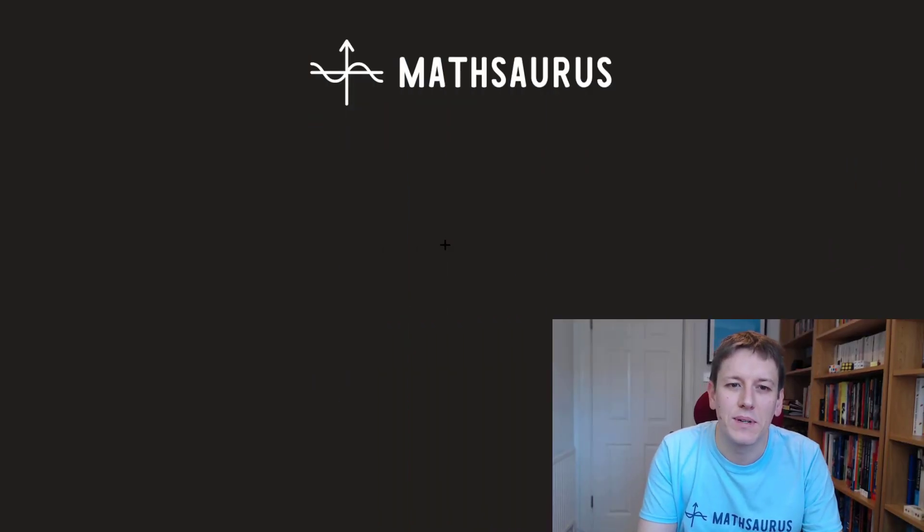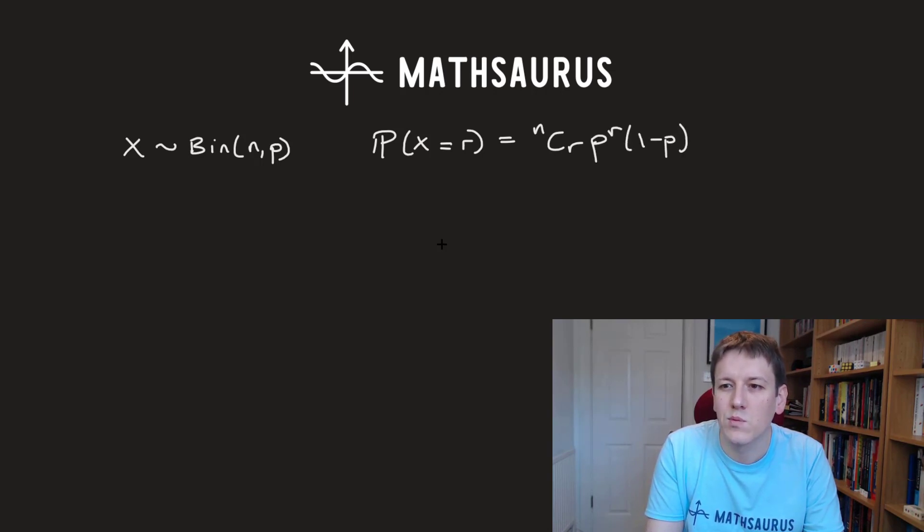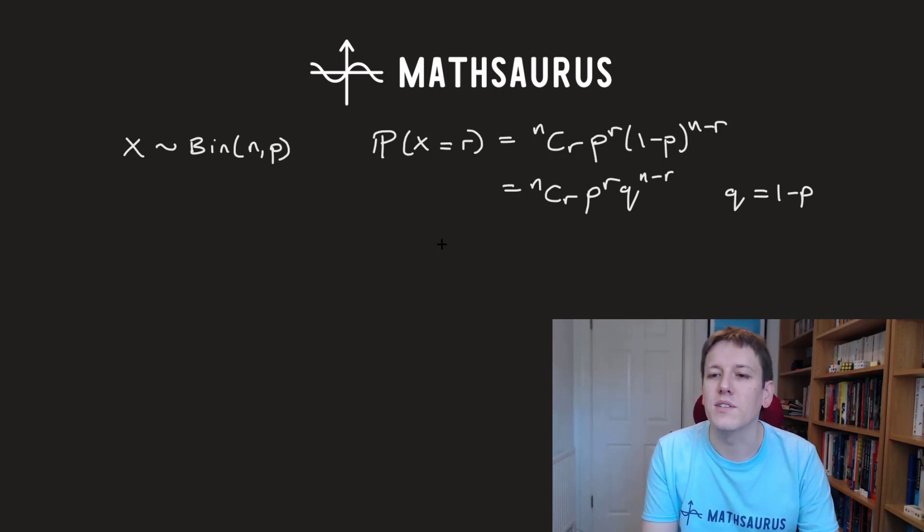So if you've studied the binomial probability distribution, you'll know that if X has a binomial distribution with parameters n and p, then the probability that X takes a particular value r is n choose r times p to the r times 1 minus p to the n minus r. We could also write that as n choose r times p to the r times q to the n minus r, where q is 1 minus p.